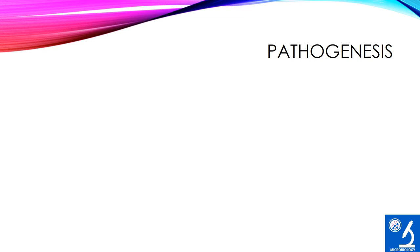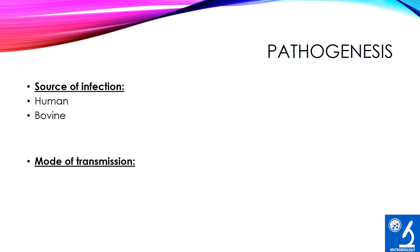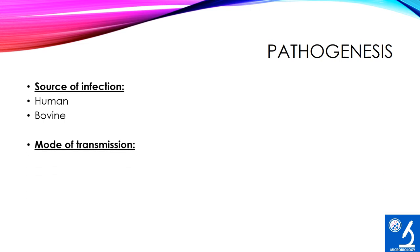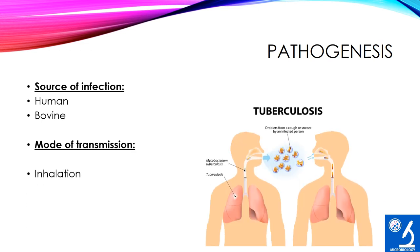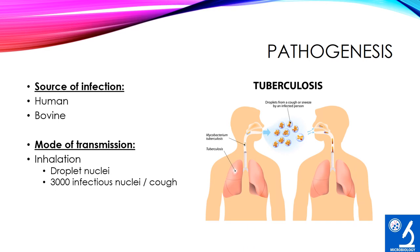In the pathogenesis, the source of infection is human — which causes tuberculosis — and bovine, where a person can acquire infection by consuming unpasteurized infected milk. The most common mode of infection is inhalation of droplet nuclei, generated while coughing, sneezing, or speaking by infected people. There may be 3,000 droplet nuclei per cough, which may remain suspended in the air for several hours. Two other modes of transmission are inoculation and ingestion.